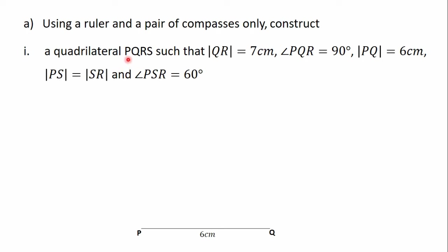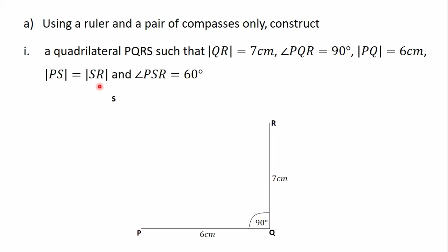In the question the vertices are in the order PQRS, so in the quadrilateral that we construct the vertices should follow that same order. That means if we have point P here and point Q here, then point R will be somewhere here and point S will be somewhere here. The question tells us that the angle PQR is 90 degrees, so we construct a 90 degree angle at point Q, and the side QR is seven centimeters.